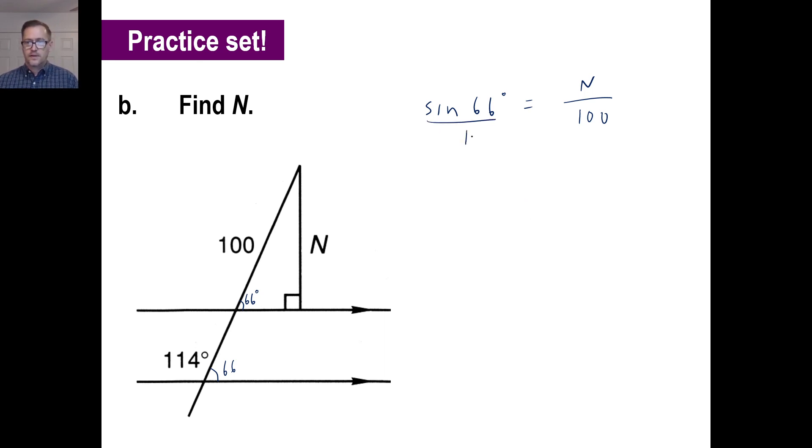I got 0.9135. And again, if you notice, you can just go cross multiply 1 times N and all you need to do is just multiply by 100. Of course, multiplying this number by 100 is a piece of cake. You just move the decimal over twice. So, N is going to be 91.4. All right. I hope that helped. And I look forward to seeing you guys. Y'all take care.